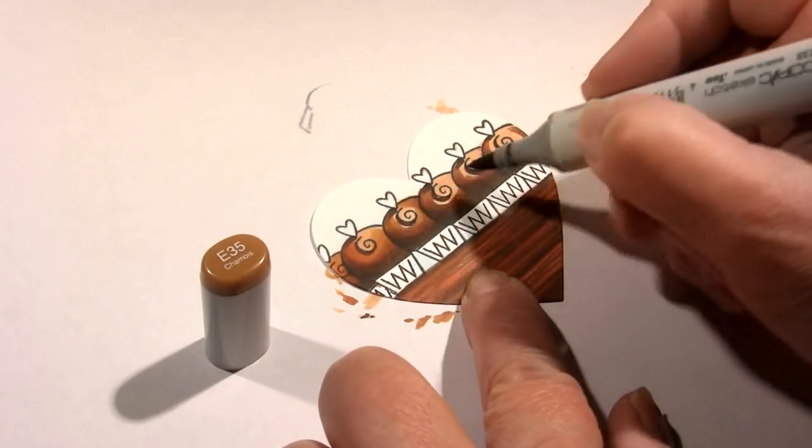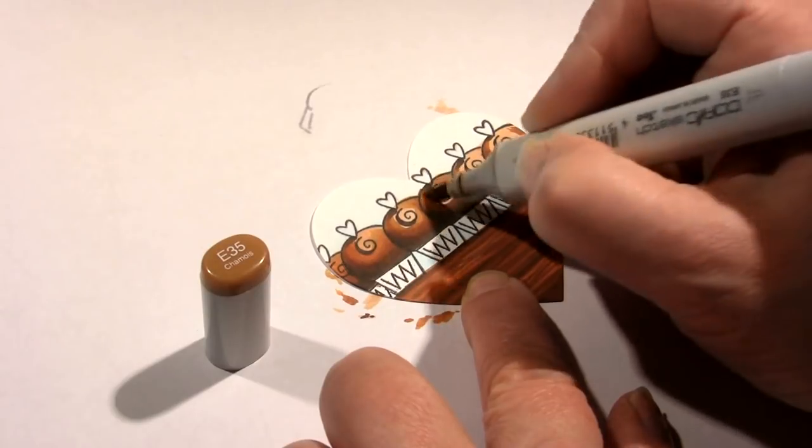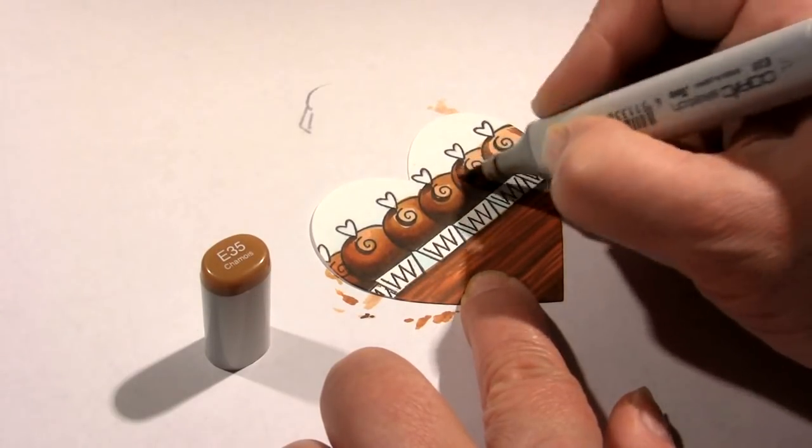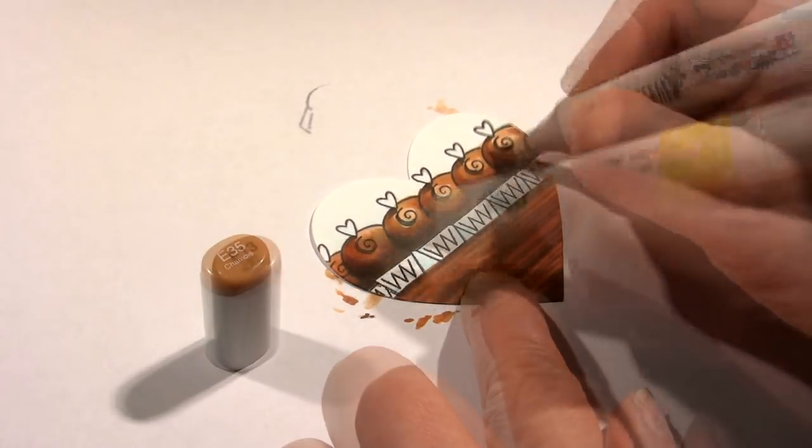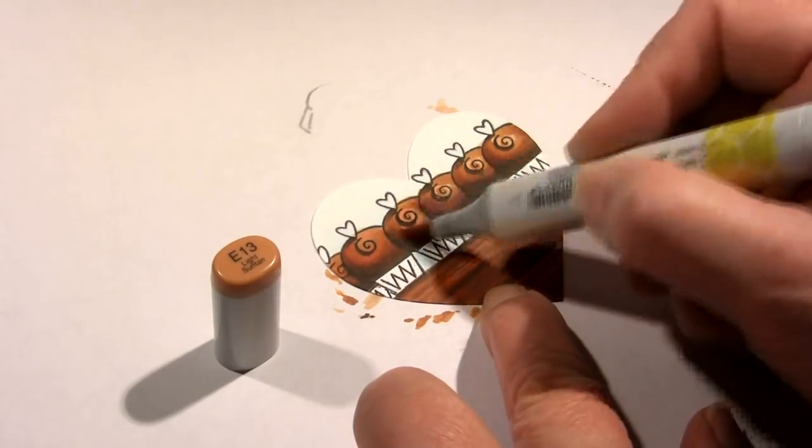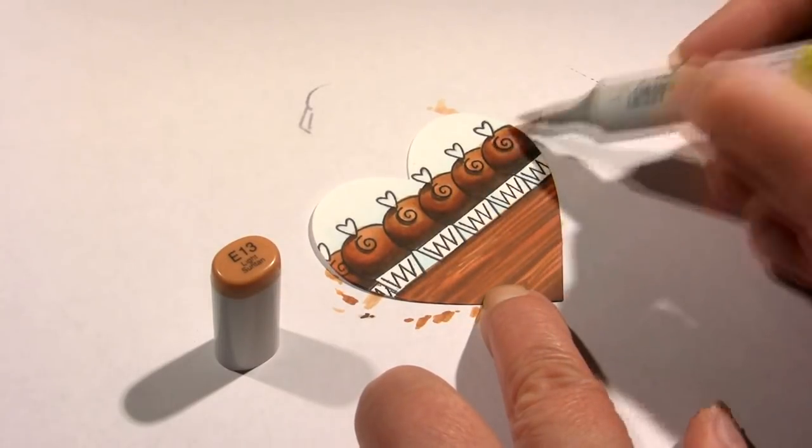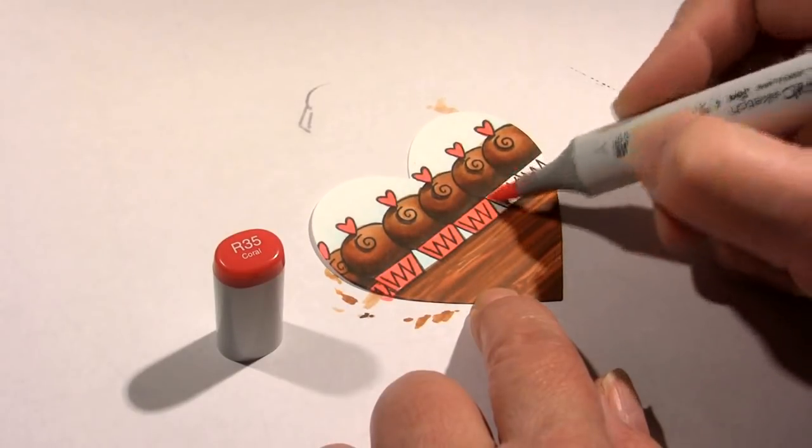E35 is the next step lighter in this series, so now I'm going to start filling in the rest of the truffle with that, except for that center spiral because I want that to really feel like it's bright and in the center. Now E13 was the base color, and I'm just going over top of everything, which blends all that color and makes it look nice and smooth and delicious.